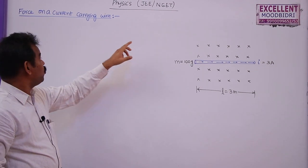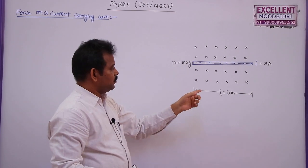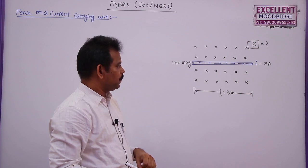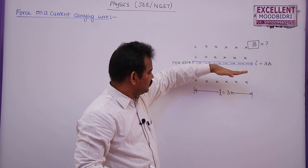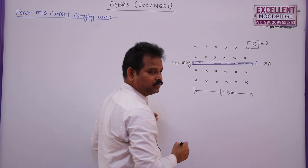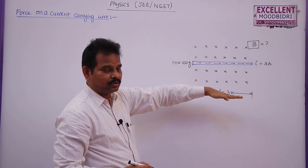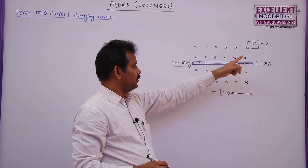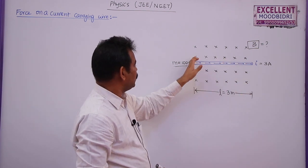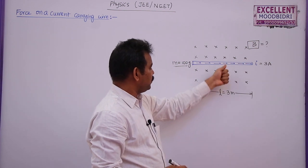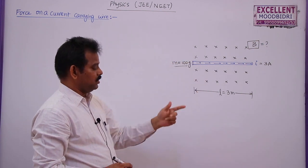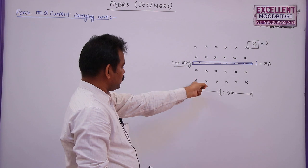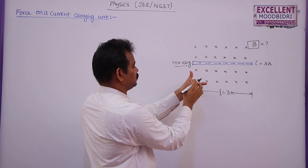A problem on force on a current-carrying wire: a magnetic field B acts into the board, and a wire carrying 3 amperes is placed in this field with current flowing from left to right. The wire has mass 100 grams, and there is no support. Using Fleming's left-hand rule — forefinger in field direction, middle finger in current direction — the magnetic force acts upward on the wire.